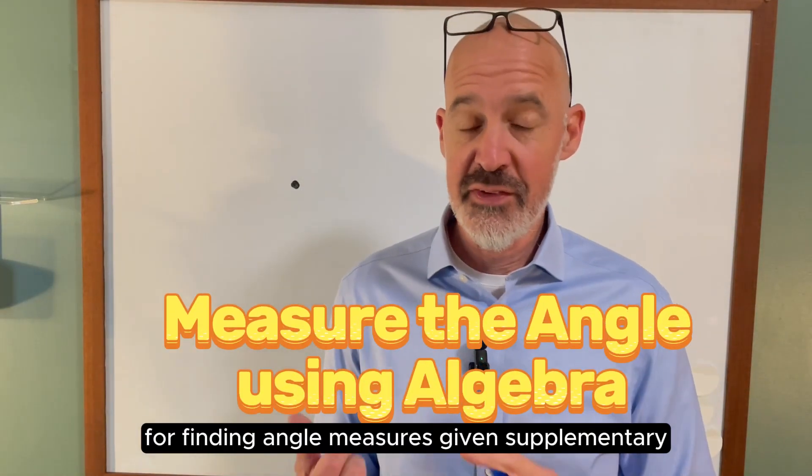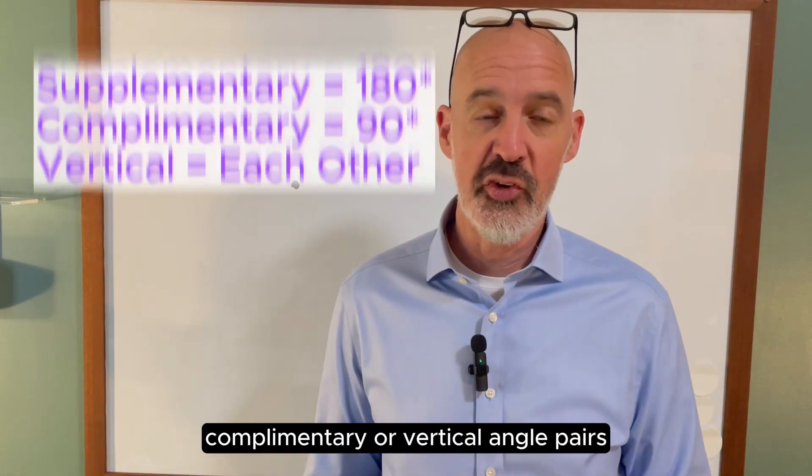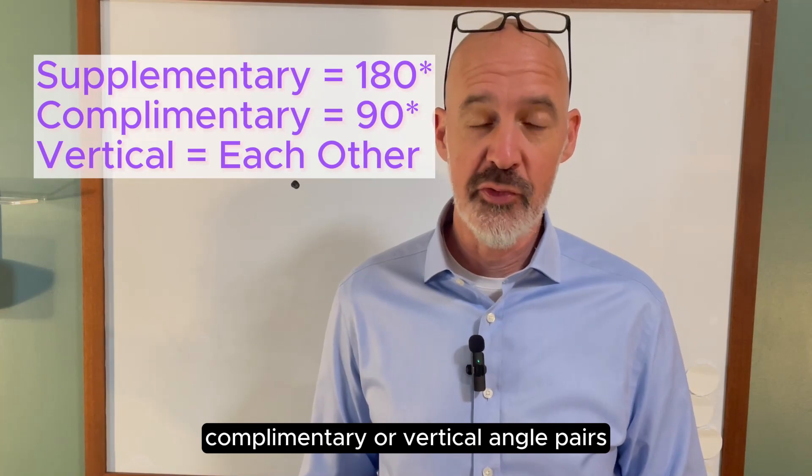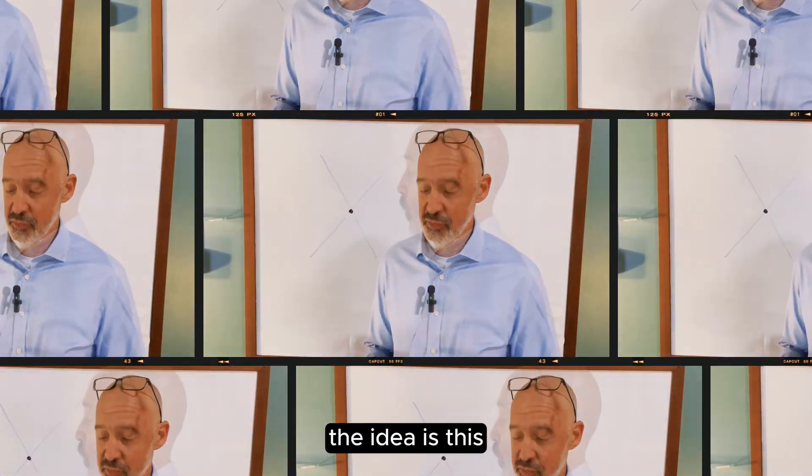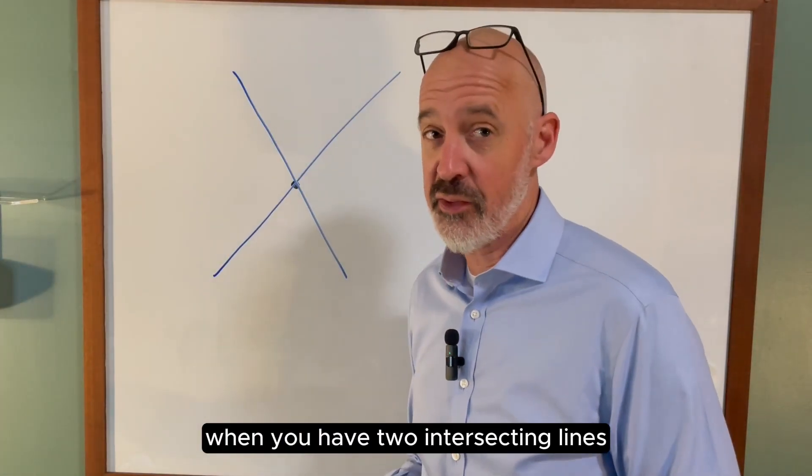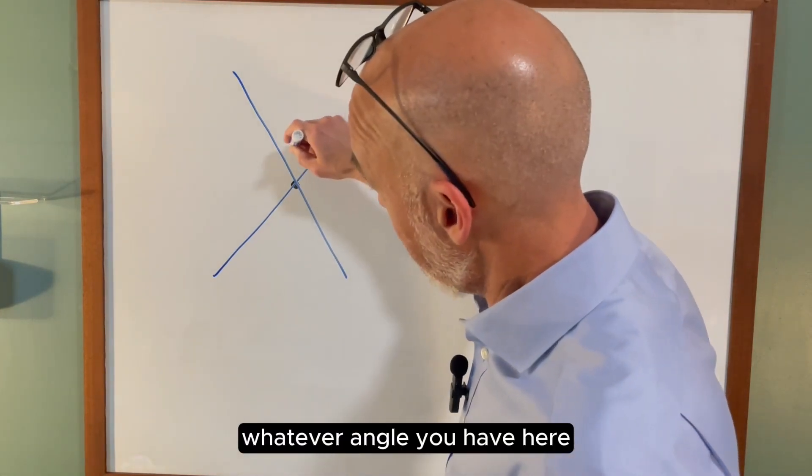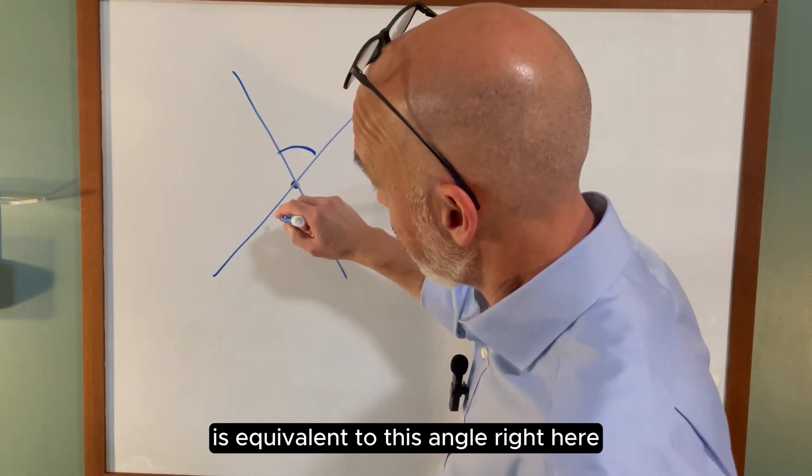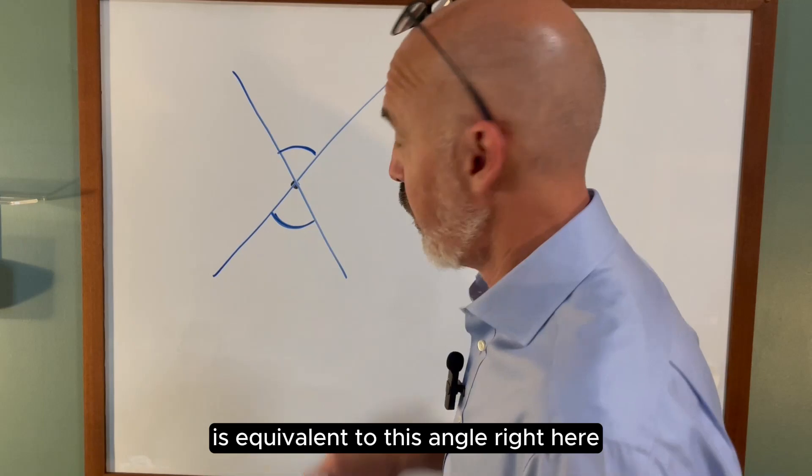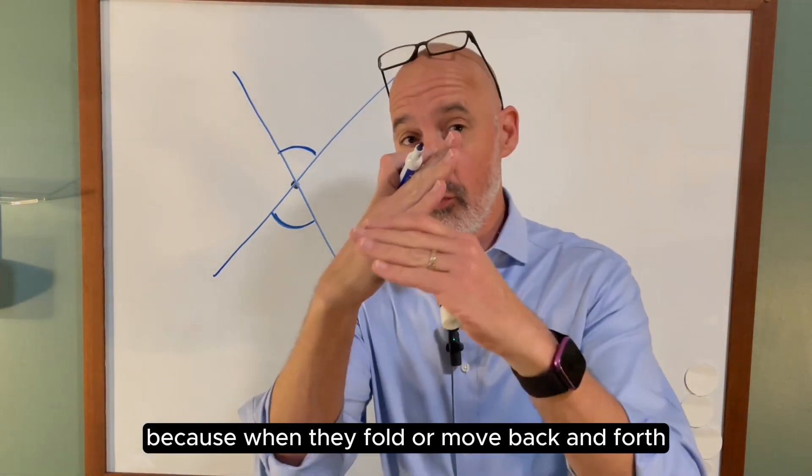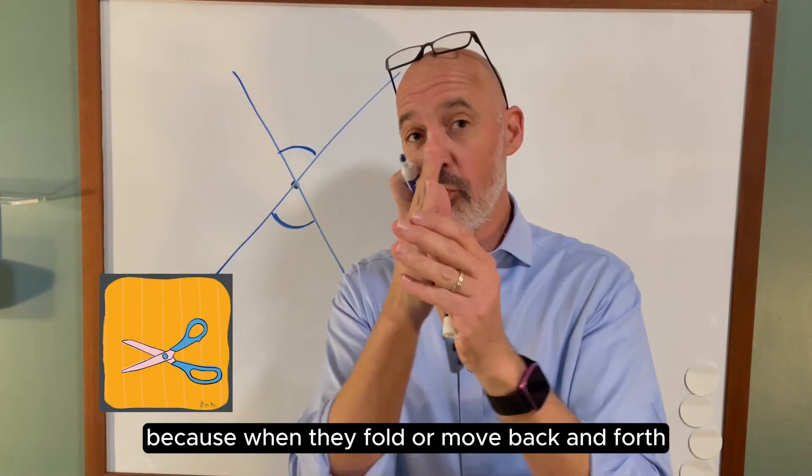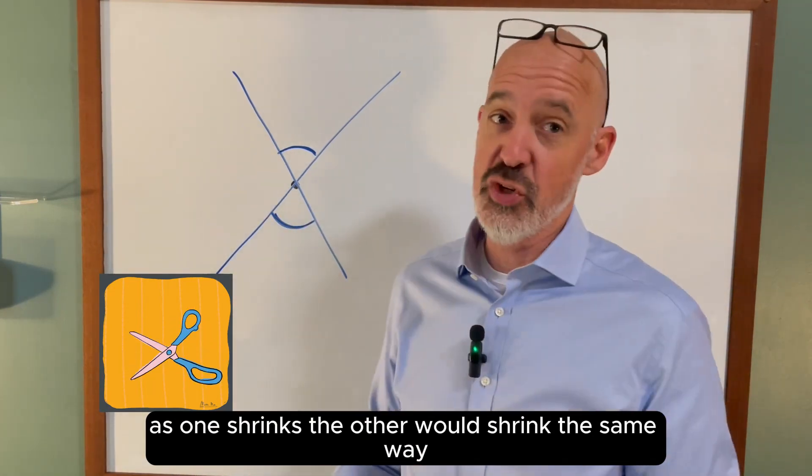This lesson is for finding angle measures given supplementary, complementary, or vertical angle pairs. The idea is this: when you have two intersecting lines, whatever angle you have here is equivalent to this angle right here, because when they fold or move back and forth, as one shrinks the other would shrink the same way.